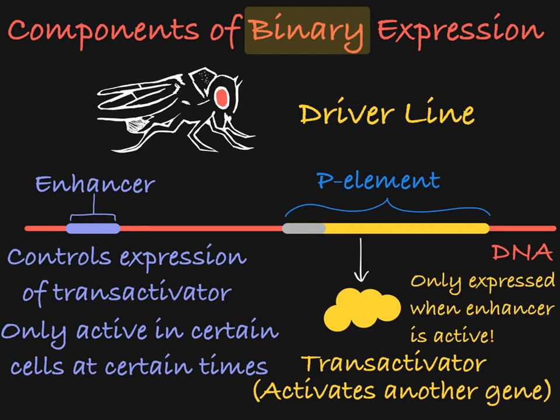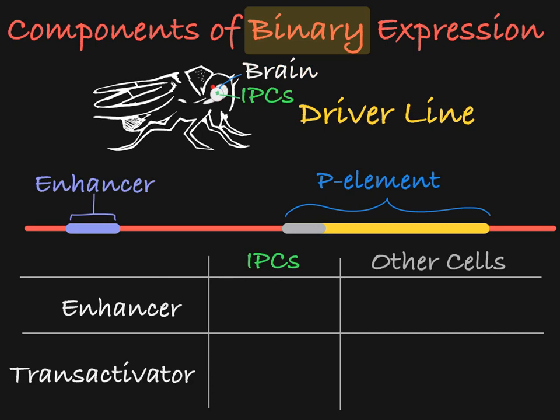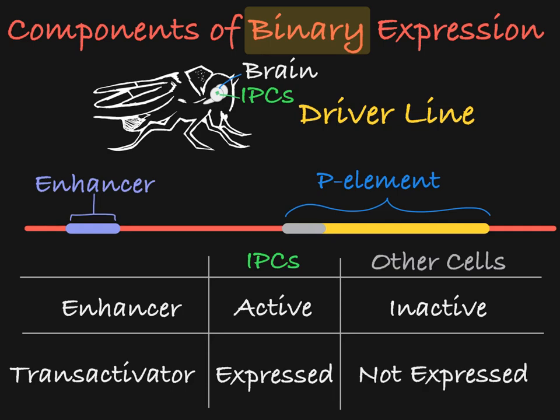For example, if the transactivator is under the control of a promoter that is only active in insulin-producing cells, which we call IPCs, then the transactivating protein will only be expressed in those cells, and not elsewhere in the organism.